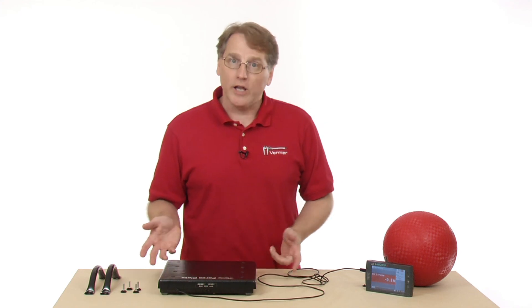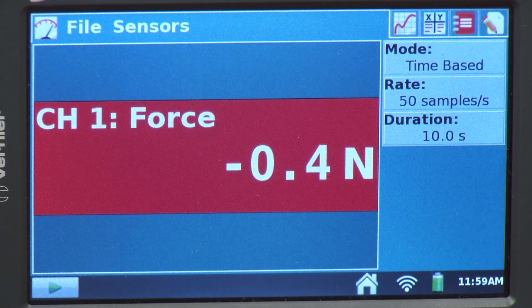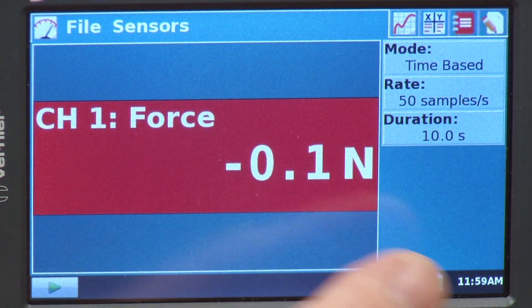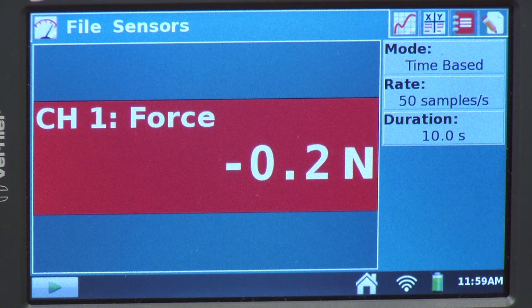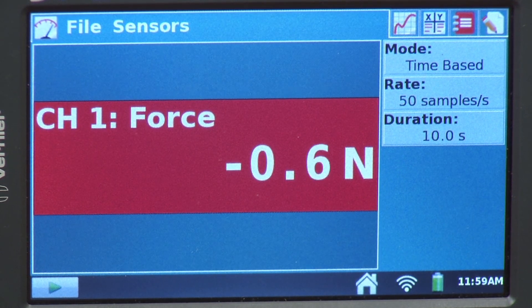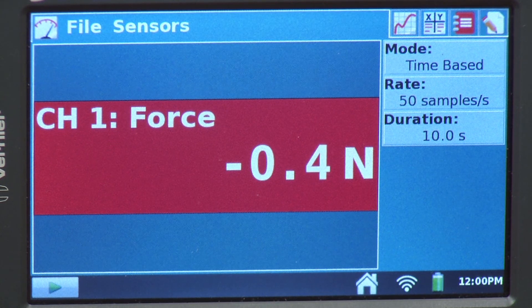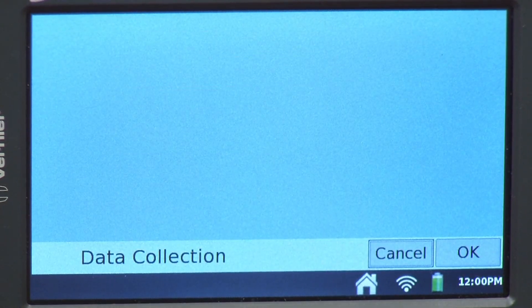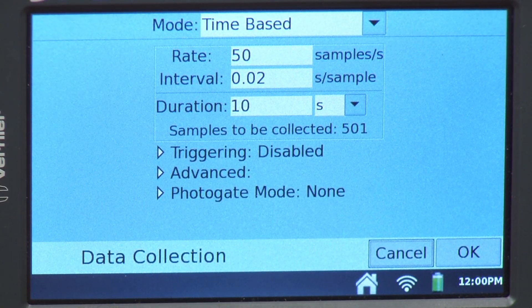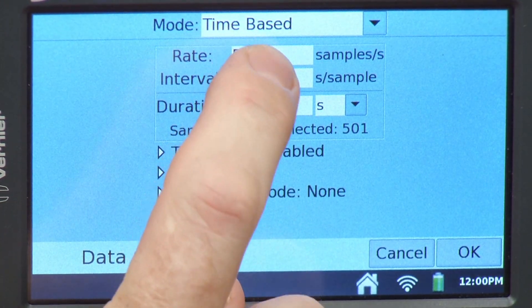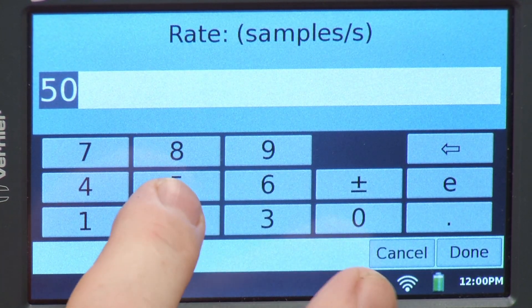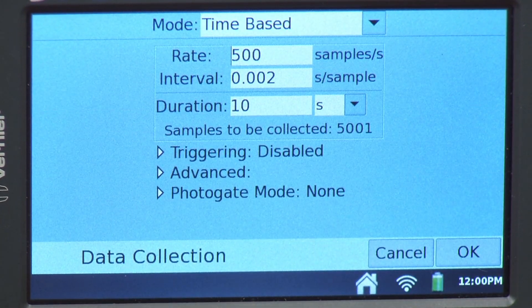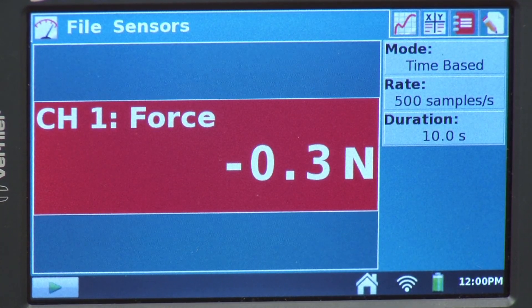At this point, let's take a look at our collection parameters. I have a time base, so it's going to look at force as a function of time. The default sample rate is 500 samples per second, and the duration is 10 seconds. The duration is fine, but my rate is not quite fast enough for me. I would like to speed this up to the maximum rate for the force plate. To do this, I just go up and tap where it says rate. Instead of it being 50, I'm going to do 500 samples per second. I say done, and I'm fine with that, so I say okay, and now I'm ready to collect data.